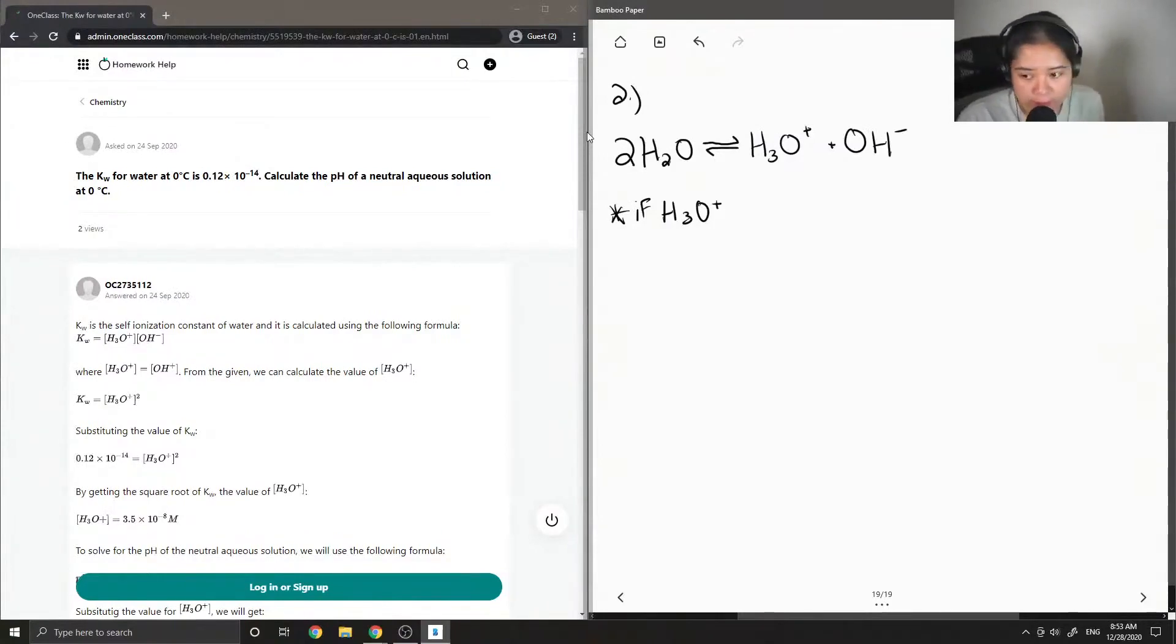If we look at this reaction we can see that H3O plus and OH minus react at a one-to-one ratio, so the concentration of H3O plus should be equal to the concentration of our OH minus ion.